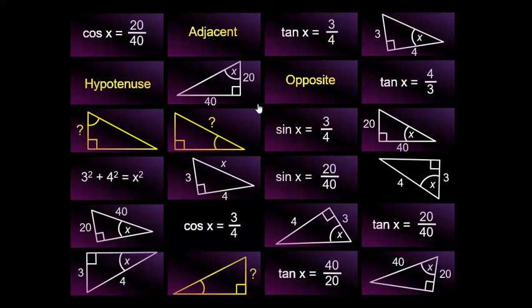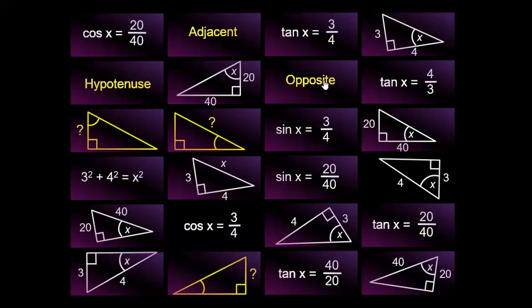So it worked particularly well just as a whole class activity. It only took 15 minutes, but it was a really slick, efficient way to revise the key trig ratios for my students, and also the classic thing of labelling the sides and not muddling up Pythagoras with trig. And it led to some really interesting discussions.